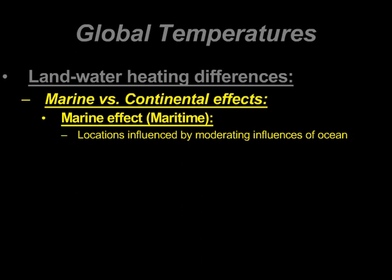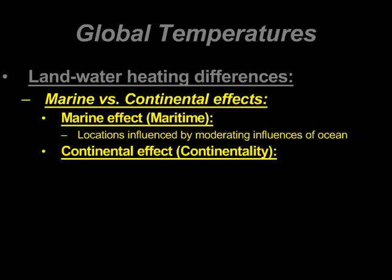Now we attach names to these key ideas. The first is the marine effect or maritime effect — places along a water body or ocean are more influenced by it and thus have less of a temperature range throughout the year. Whereas places with high continentality, deep within a continent, are affected by what we call the continental effect — areas less affected by the sea. Indiana, for example, is overwhelmingly deep within the continent, exposed to high continentality, with notable variations in temperature throughout the year.